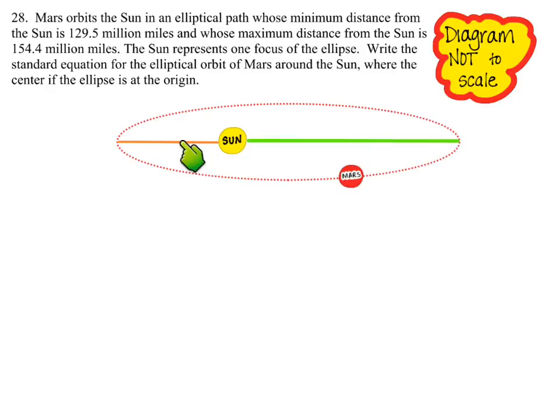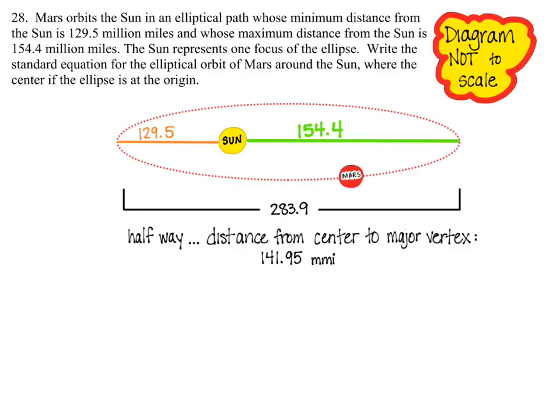We're going to talk about the shortest distance and the longest distance from the sun to the ellipse, and we put in those numbers that we were given. From this information, we can then add these two numbers together to get the entire distance from one major vertex to the other. Half of that distance would be the distance from the center to one major vertex, so I put that in the diagram.